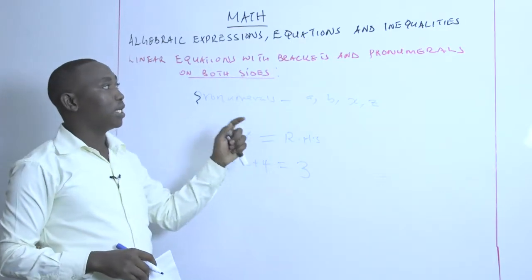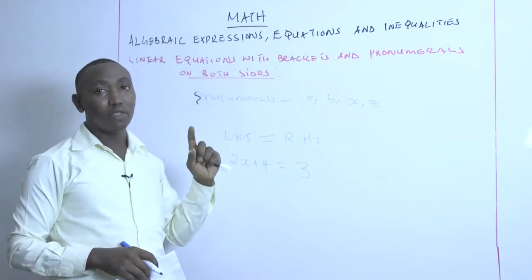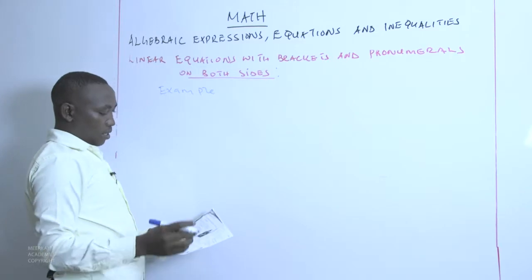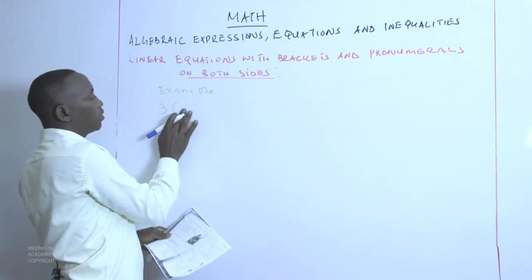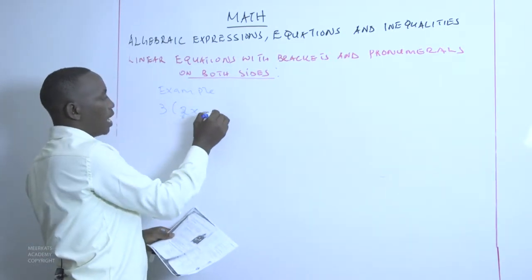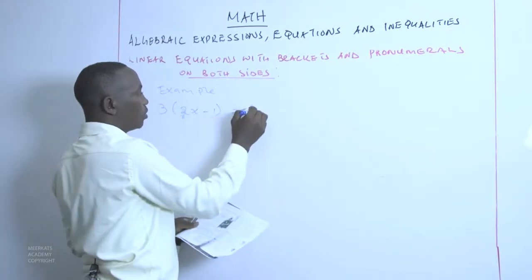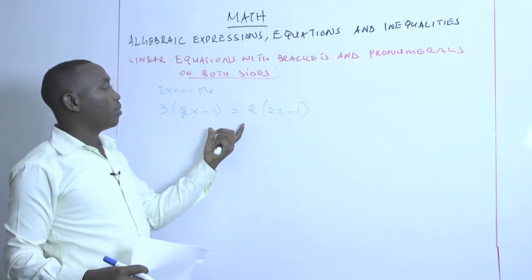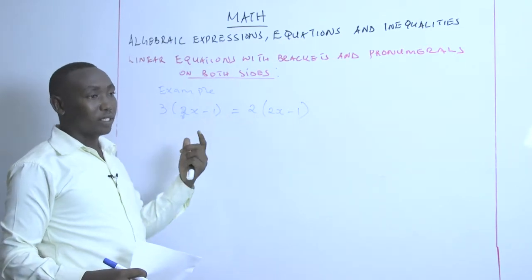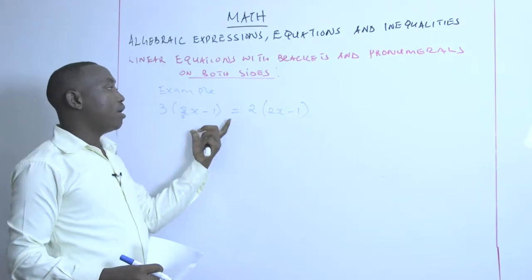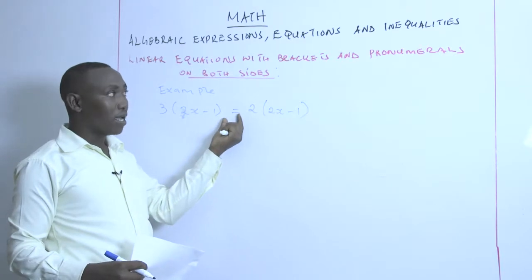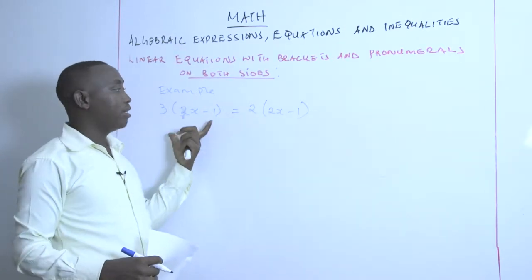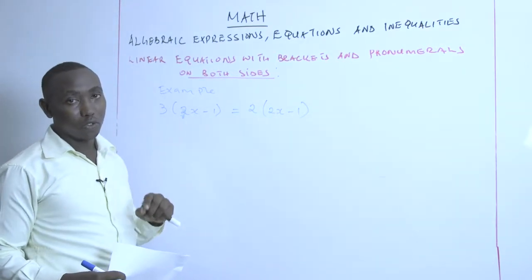In this particular lesson, we want to consider equations that have pronumerals on both sides. A good example is 3 into (2X minus 1) equals 2 into (2X subtract 1). This is an equation because it has an equal sign and two sides — the left-hand side and the right-hand side — with brackets and pronumerals on both sides. To solve this, we need to expand the brackets on both sides, then collect the like terms before we solve.